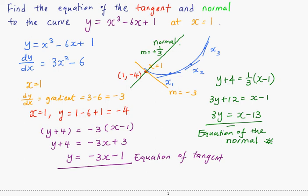This is how you find the equation of the tangent and normal. They pass through the same point (1, -4), and you find the gradient using dy/dx.